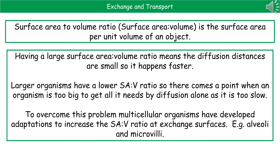In today's Biology Blast, we're going to look at human exchanges and transport. The first thing we need to know is the idea of surface area to volume ratio — that is the surface area per unit of volume of an object. This is important because when we've got a large surface area to volume ratio, diffusion distances are small, so it happens much faster.